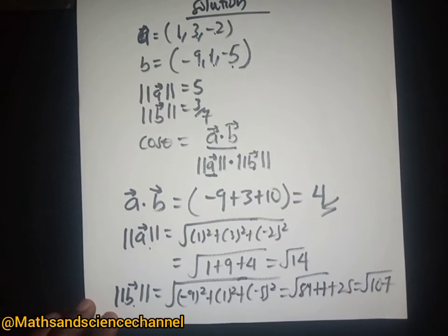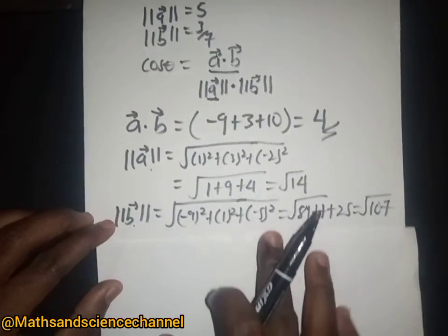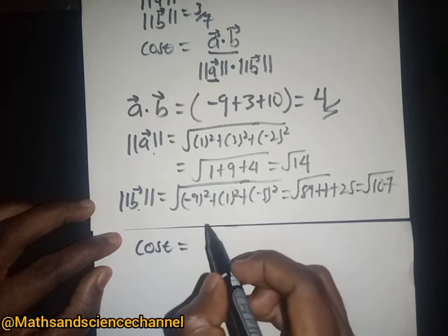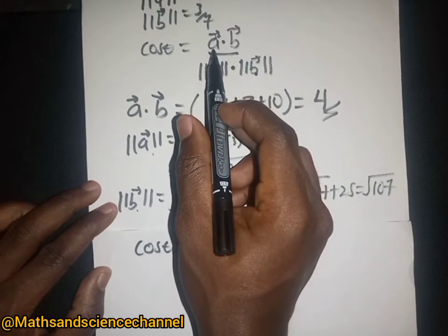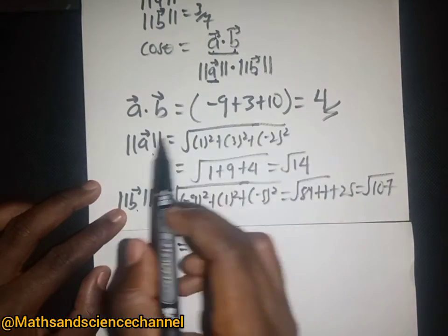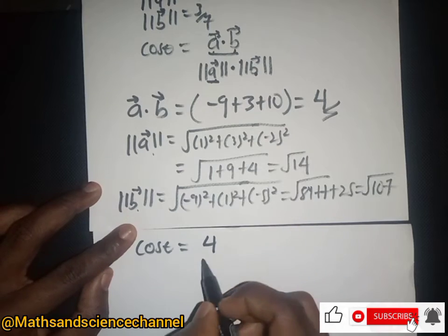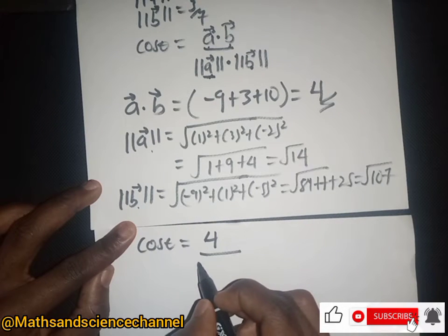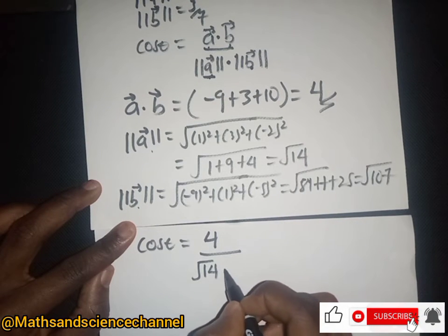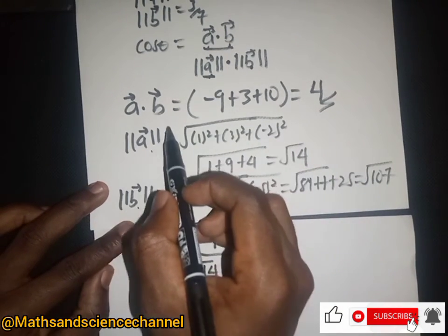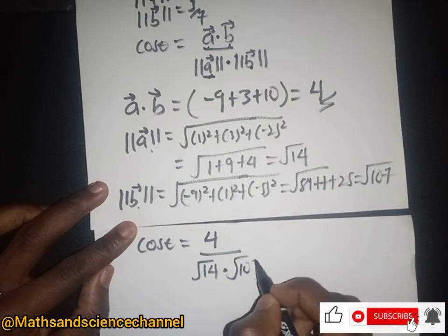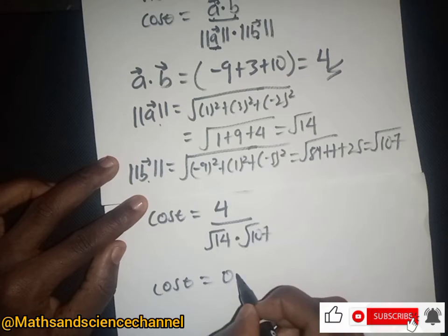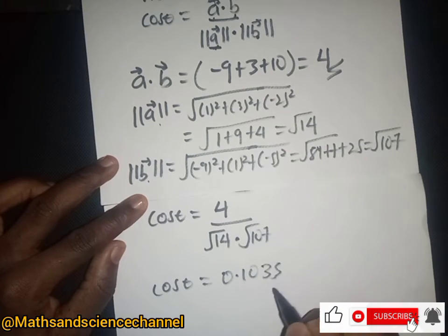Now we insert these values into the formula. So cos θ equals the dot product, which is 4, divided by the magnitude of a (which is √14) multiplied by the magnitude of b (which is √107). When we compute this, we get approximately 0.1033.